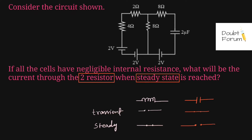In this question, we are asked to find the current flowing through this 2 ohm resistor when the steady state is achieved. As we can see, when the steady state is achieved, this capacitor — because there is only one capacitor connected in this circuit — would behave like an open circuit. So once this branch has been opened, what would be the current flowing through this 2 ohm resistor? That is all we have to find out.